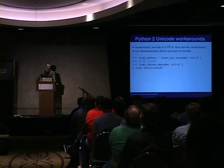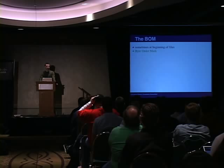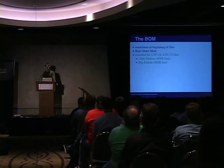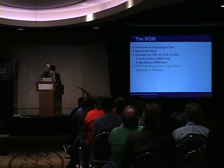Sometimes at the beginning of files you'll see a byte order mark, also referred to as a BOM. This is essential for UTF-16 and UTF-32 files, because since they're multi-byte, they can be in little endian or big endian, and the BOM tells you the byte order. But the UTF-8 BOM is just like a signature — it's sometimes there and sometimes not. It's very common in Windows to have a UTF-8 BOM. The BOM itself can be 2, 3, or 4 bytes long, so you'll have to read a 4-byte sample.